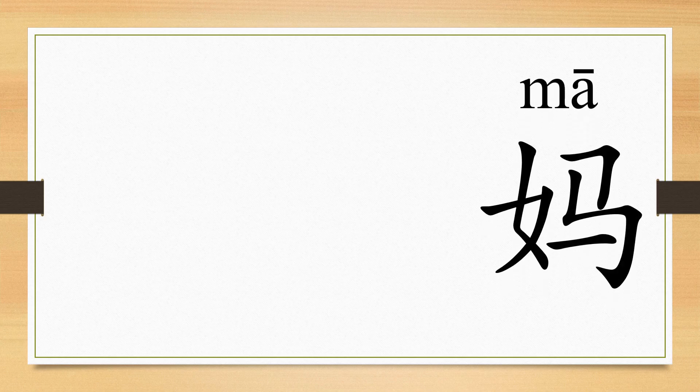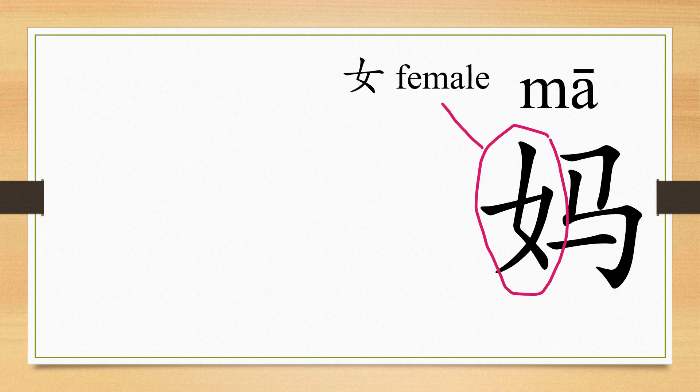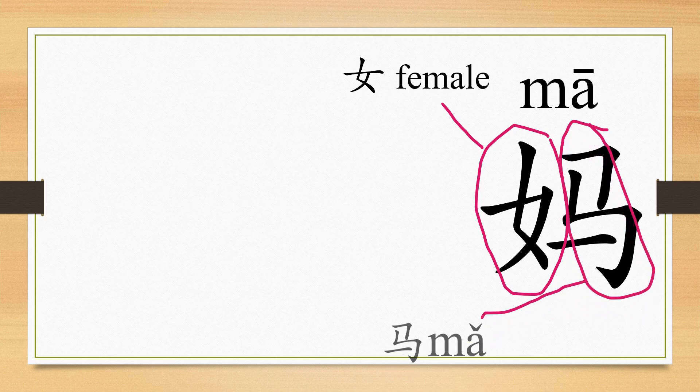The next character is 妈 (Mā). 妈 consists of two parts: the left radical 女 (Nǚ), meaning female, indicating that the character's meaning is related with 女; and the right radical 马 (Mǎ), indicating that this character's pronunciation is related with 马 — Mā.